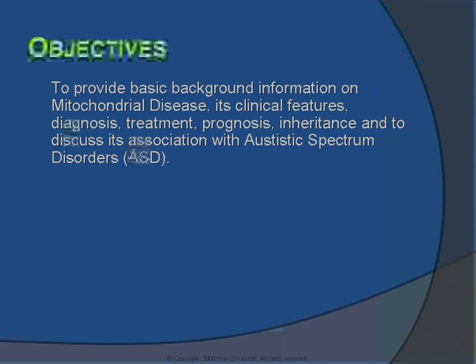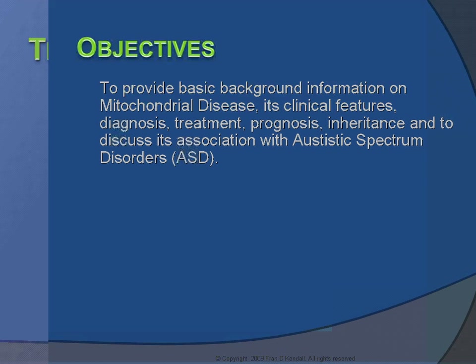The objectives of today's discussion is to provide basic background information on mitochondrial disease, its clinical features, diagnosis, treatment, prognosis, inheritance, and to discuss its association with autistic spectrum disorders.